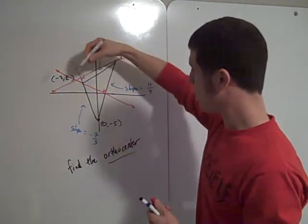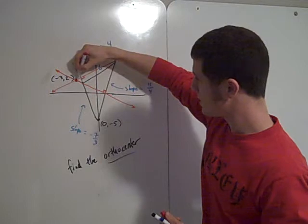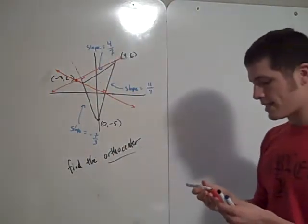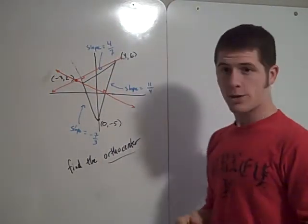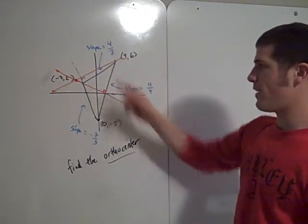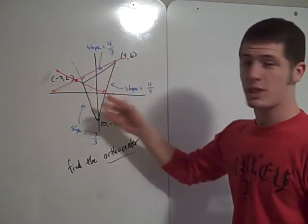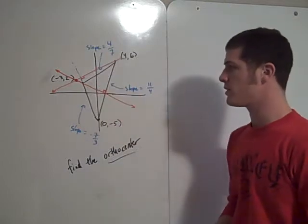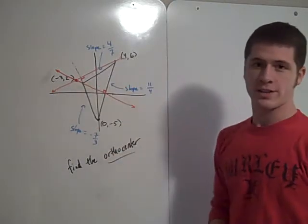And this point where these two red lines intersect, where the two altitudes intersect, that's the orthocenter. So how can I find the equations of these two lines? Because you need to find the equations of the altitudes in order to find the coordinates of the orthocenter.